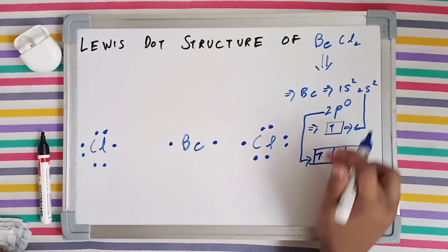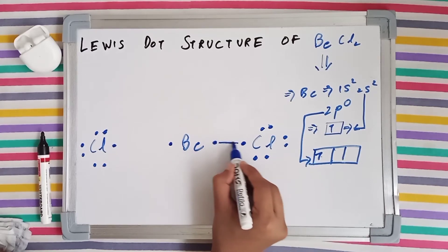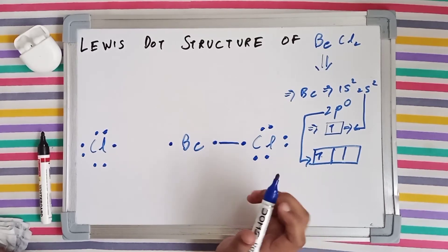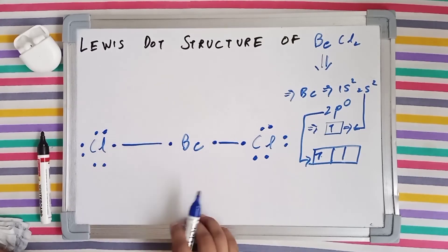So now it will be able to make 2 bonds. So first bond it will make with the chlorine which is present on its right side, and a second bond it will make with the chlorine present on its left side.